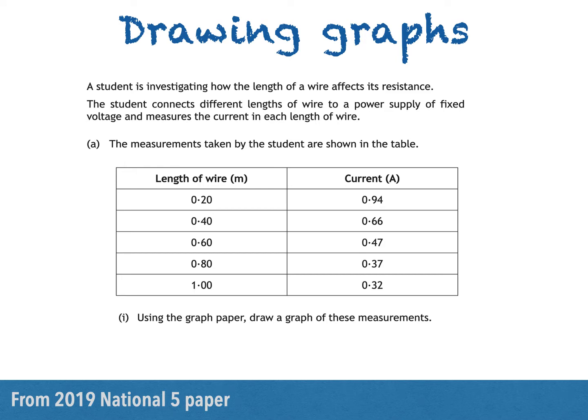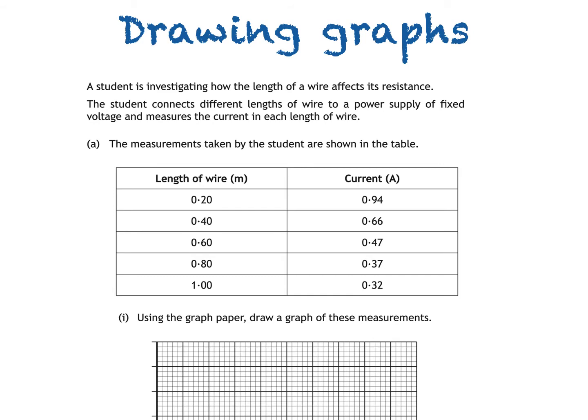Part 1 says using the graph paper draw a graph of these measurements. So here's the graph paper here. At this stage we only need that and the table of results. The first thing we'll do then is to label the axes.